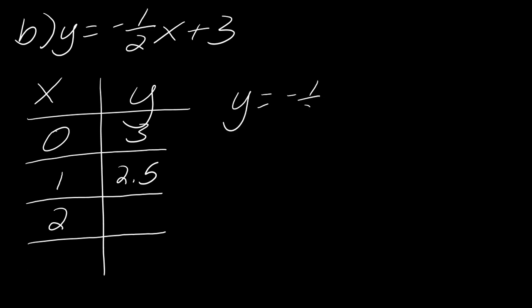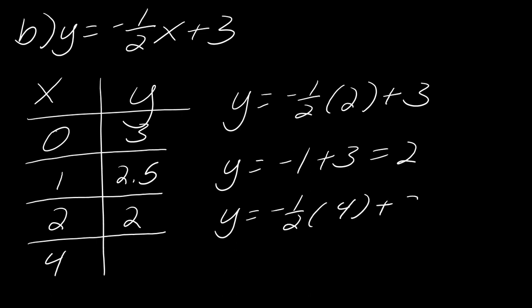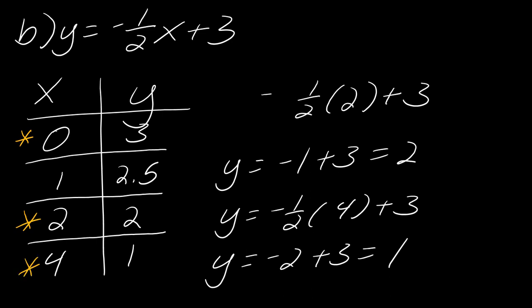If I choose x = 2: y = −(1/2)(2) + 3 = −1 + 3 = 2. That's much better. Then choosing x = 4: y = −(1/2)(4) + 3 = −2 + 3 = 1. So my three points are (0, 3), (2, 2), and (4, 1) — nice whole-number points to work with.